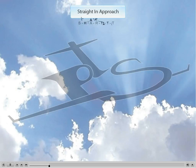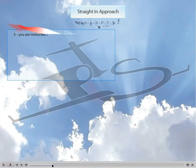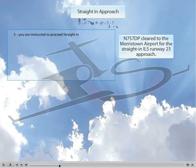The acronym is SHARPTT. The S stands for Straight In. You would not do a procedure turn if the controller at some point said, for example, 'N757DP cleared straight in for the ILS Runway 23.' In general, you would receive a straight-in approach when you're close to 30 degrees from the final approach course. Your own heading and the final approach course are within 30 degrees. That's generally when you receive a straight-in approach, but it could happen at any point.